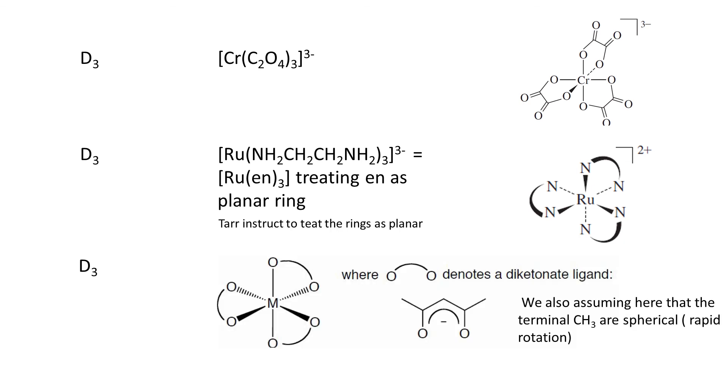In the last example the ligand's carbon backbone is planar, because there is conjugation, the middle carbon has been deprotonated. But notice we are assuming that the terminal CH3s are spherical, and that's fair because there is fast rotation.